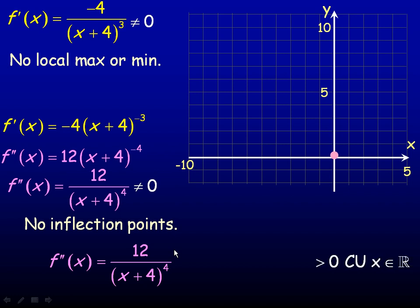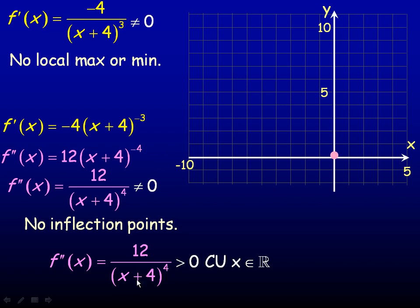There is still concavity, even without inflection points. Concavity can change across the vertical asymptote at negative 4. However, since x plus 4 is raised to the 4th power — an even power — in the denominator, the second derivative can never be negative. It is always positive, so the graph is completely concave up everywhere it is defined. Remember, even without a point of inflection, there is still concavity unless the graph is a straight line.